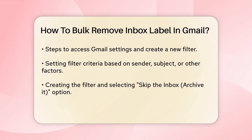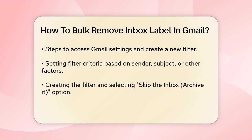Open your Gmail account and click on the Settings gear icon in the top right corner. Select See All Settings from the drop-down menu. Navigate to the Filters and Blocked Addresses tab and click on the Create a New Filter option.